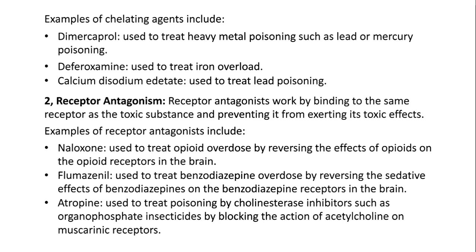Receptor antagonists work by binding to the same receptor as the toxic substance and preventing it from exerting its toxic effects. Examples include Naloxone, used to treat opioid overdose by reversing the effects of opioids on the opioid receptors in the brain, and Flumazenil, used to treat benzodiazepine overdose by reversing the sedative effects of benzodiazepines on the benzodiazepine receptors in the brain.